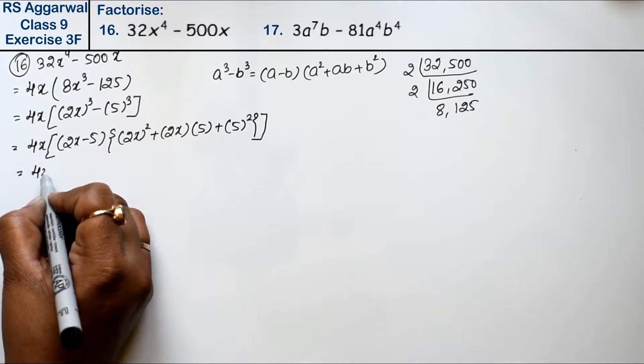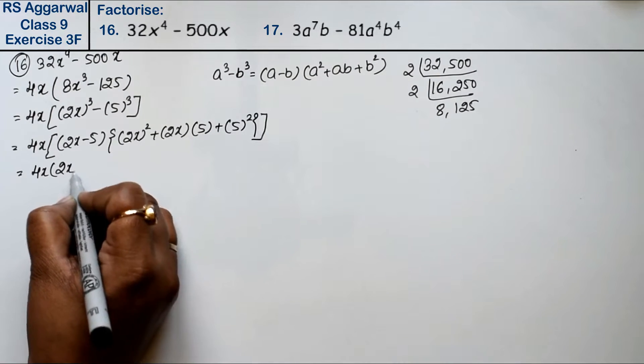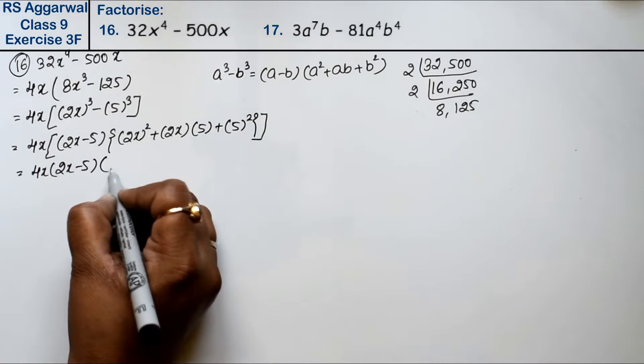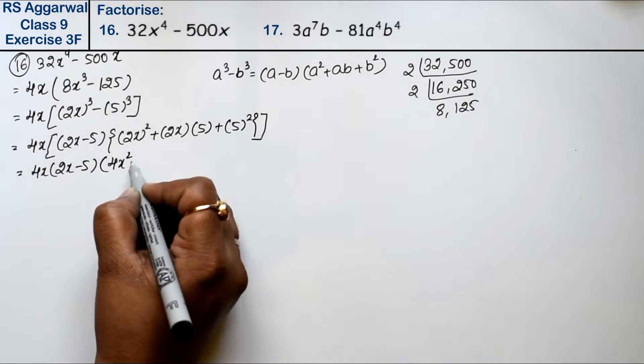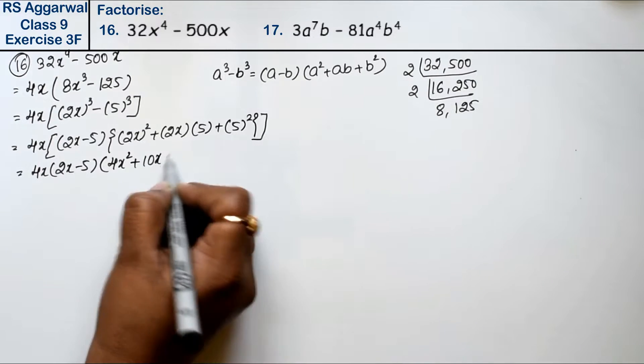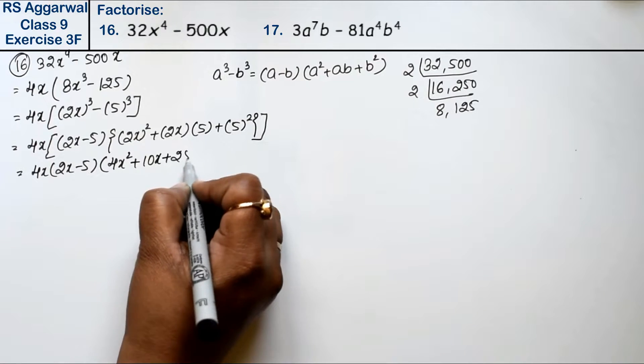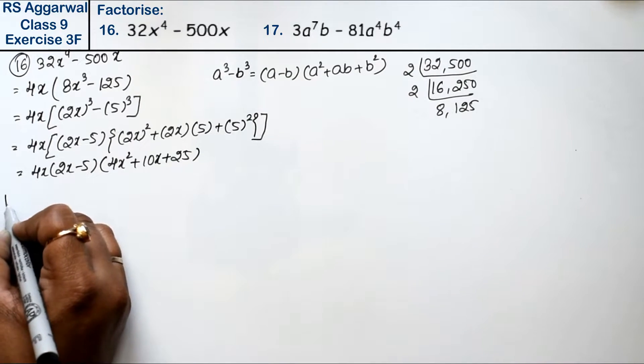This becomes 4x(2x - 5)(4x² + 10x + 25). This is the answer. Let's do question number 17.